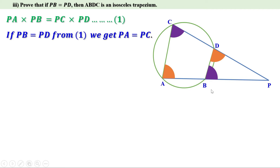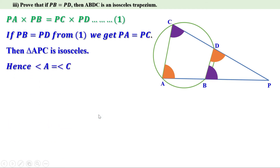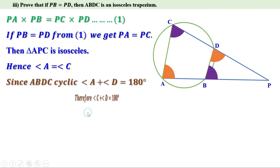Now, look at triangle APC. PA and PC are equal. Therefore, it is an isosceles triangle and the angles opposite to equal sides are equal. Opposite to PA is angle C, and opposite to PC is angle A. Therefore, angle A equal to angle C. Now, look at ABDC — it is a cyclic quadrilateral. The opposite angles are supplementary. Therefore, angle A plus angle D equal to 180 degrees. But angle A and angle C are equal. Therefore, we can replace angle A by angle C, and we get angle C plus angle D equal to 180 degrees.